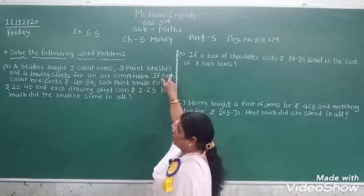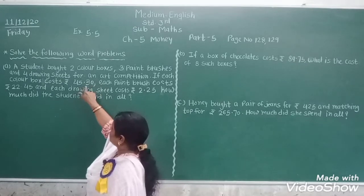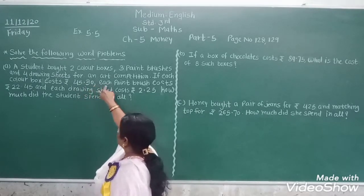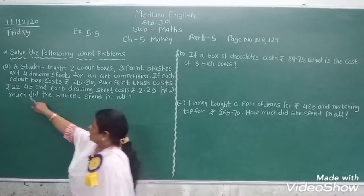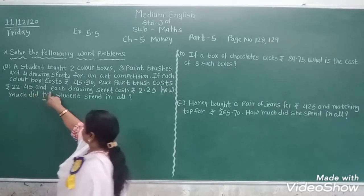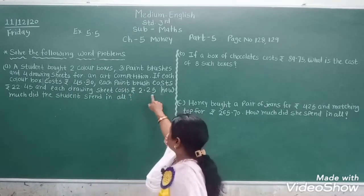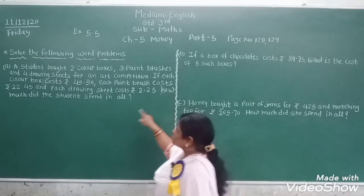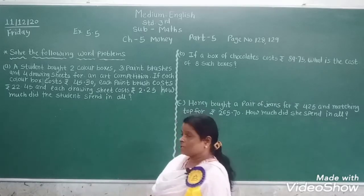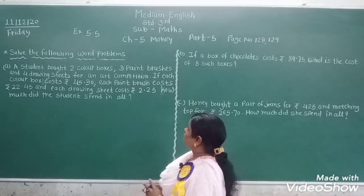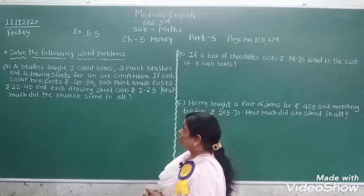If each color box costs Rs. 45.30 paise, each paint brush costs Rs. 22.45 paise, and each drawing sheet costs Rs. 2.25 paise — how much did the student spend in all? He has two color boxes, three paint brushes and four drawing sheets for an art competition.